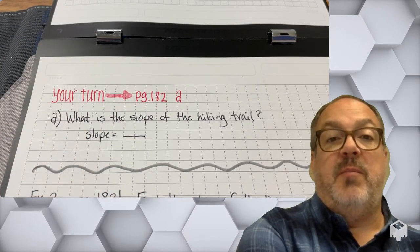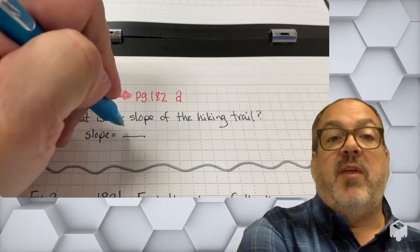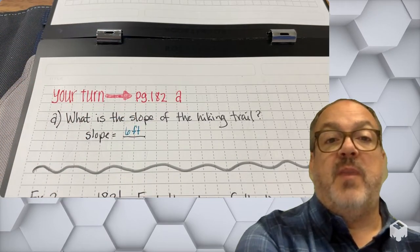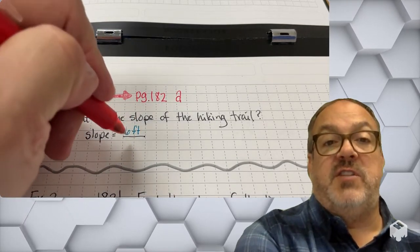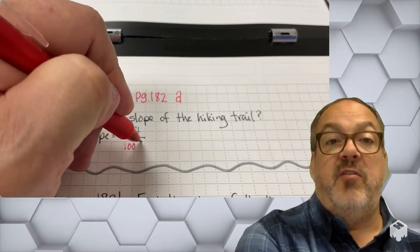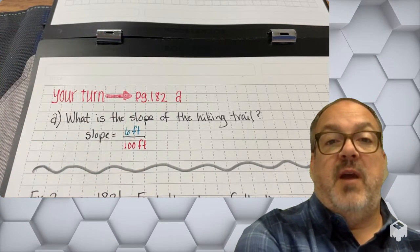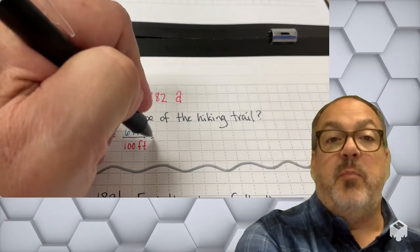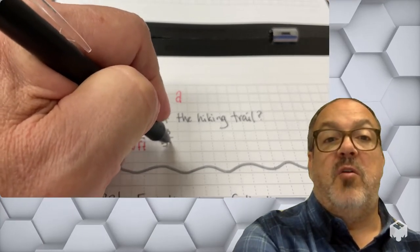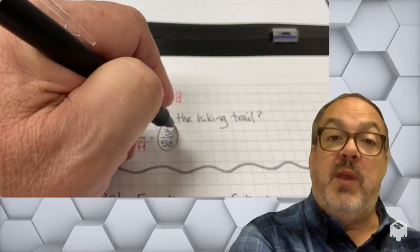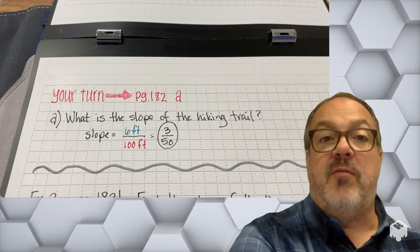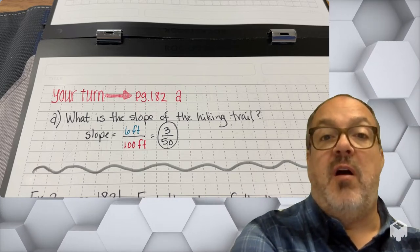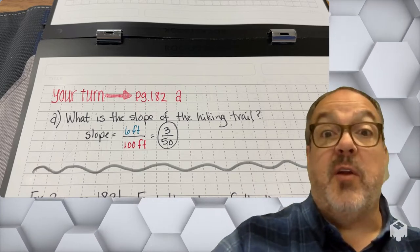And so in this problem, we know that the vertical change, or the rise, was 6 feet. And that horizontal change, or the run, was 100 feet. I can simplify that by dividing both 6 and 100 by 2, and I get 3 over 50. What that means is for every 6 feet that I go up, I have walked forward 100 feet. Sorry, 50 feet.